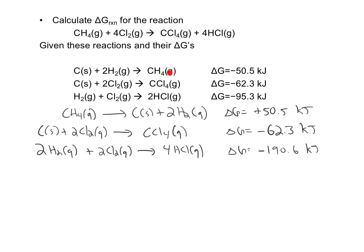At this point I've used all the given reactions. If I've done everything correctly, adding these reactions up should give me the reaction I'm looking for. I'll look for terms that are identical on the reactant side of one reaction and the product side of another, and cancel them. I've got two moles of H2 on each side — those cancel. I also have a carbon and a carbon that cancel. The two Cl2 terms are on the same side, so rather than canceling, I'll add them up.